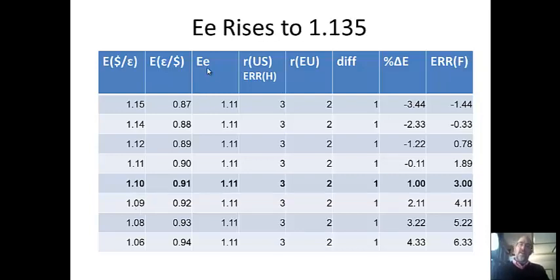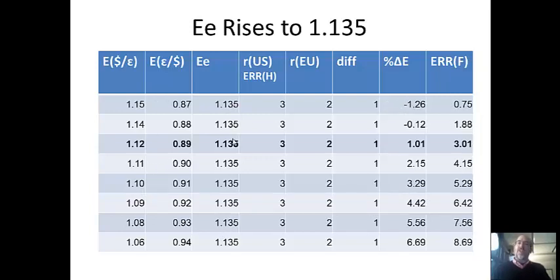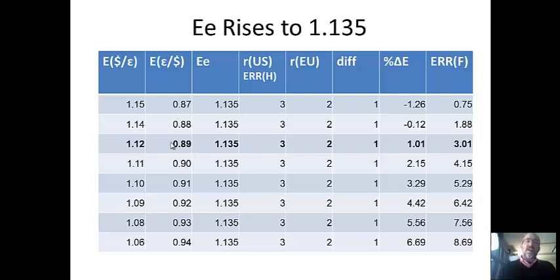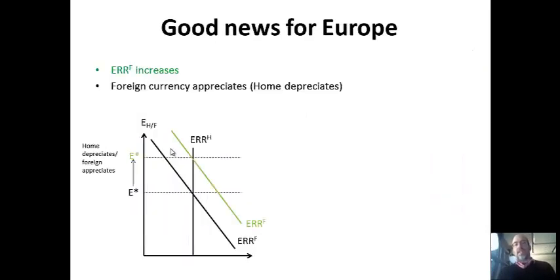Now let's look at a rise in expectations—good news for Europe. Investors previously thought the Euro was worth $1.11, but now a positive political or economic forecast makes them think it'll be worth more. This changes the expected future rate, shifting the foreign ERR rightward: all rates of return become higher. The interest rate gap is still 1%, and the exchange rate change fills it. The new crossing point gives a stronger Euro and weaker dollar—the Euro gains about a cent while the dollar loses some Euro value.